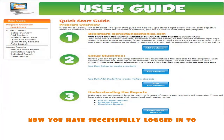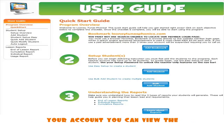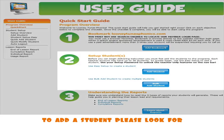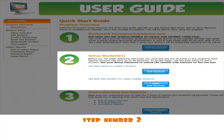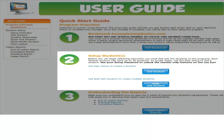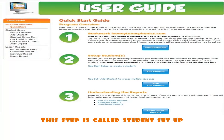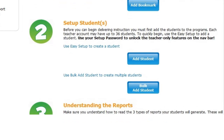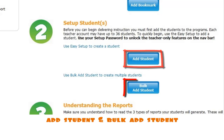Now that you have successfully logged in to your account, you can view the Quick Start Guide. To add a student, please look for step number two. This step is called Student Setup. Within step two, you will see two buttons: Add Student and Bulk Add Student.